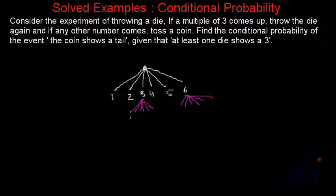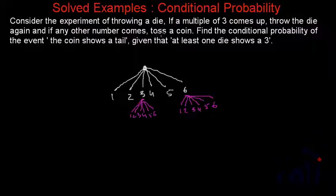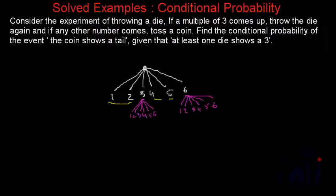Here again we can have one, two, three, four, five or six. And here also we can have one, two, three, four, five or six. And if any other number comes up, toss a coin. That means for one, two, four and five, we have to toss a coin. So if we toss a coin at this level, we can get two outcomes: heads or tails.